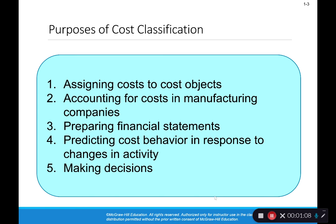Cost can be classified in a variety of different ways. We assign cost to various cost objects, which is anything we're interested in having cost information for. A cost object could be a particular product that we produce, a particular division of the company, or a particular area that we operate in — any item that we want to have additional cost information for.